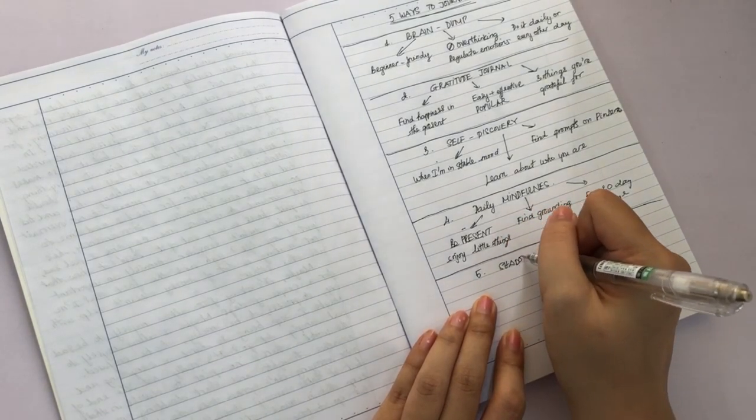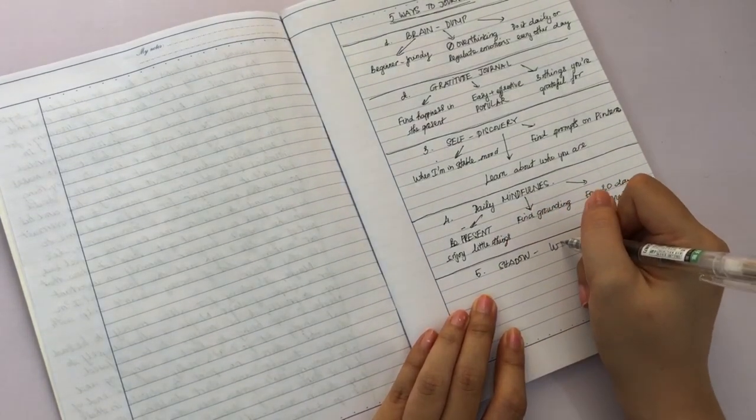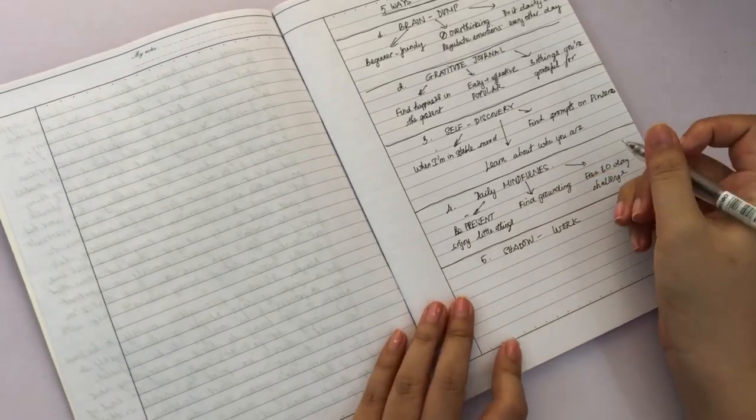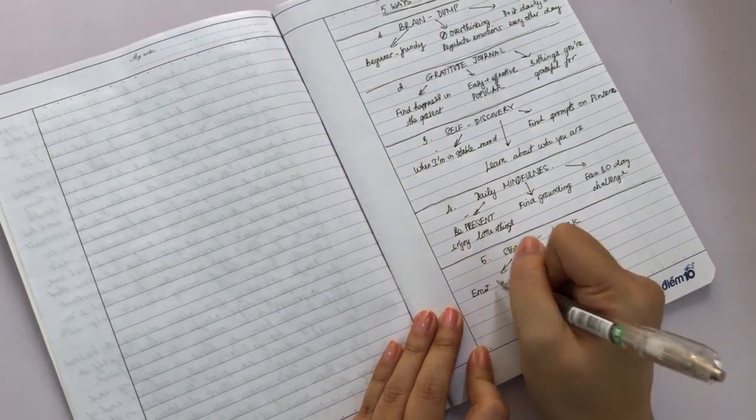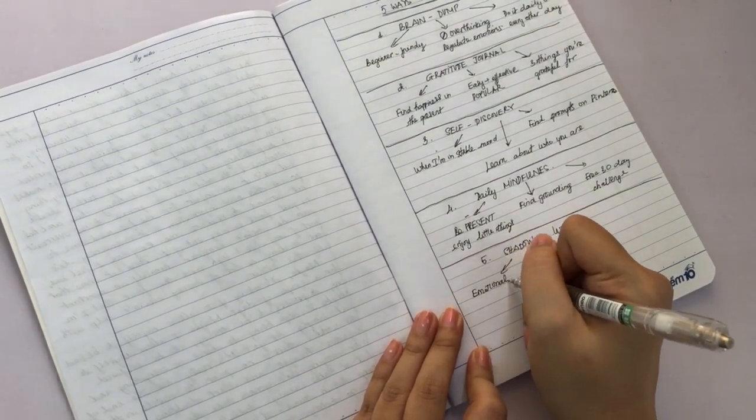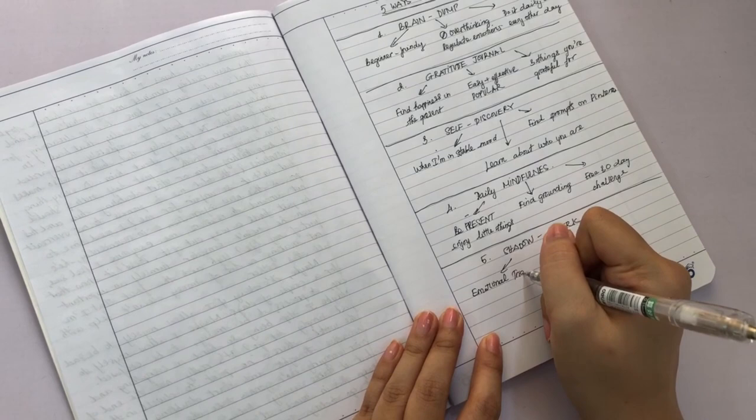All right, we're moving to the last kind of journal, which is shadow work. Now this is the kind of journal that I think a lot of people do in therapy because it is going to trigger you kind of.